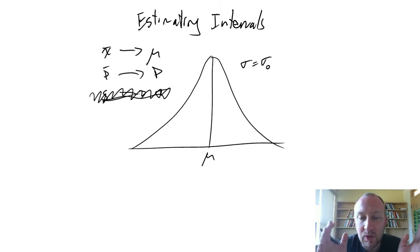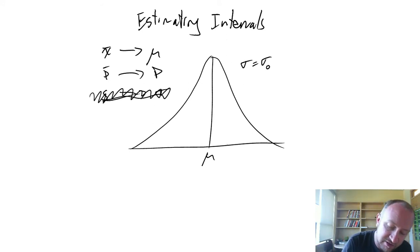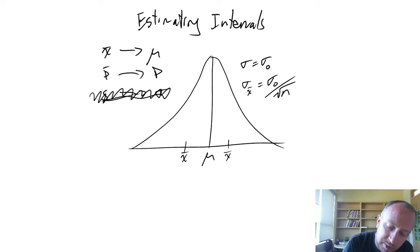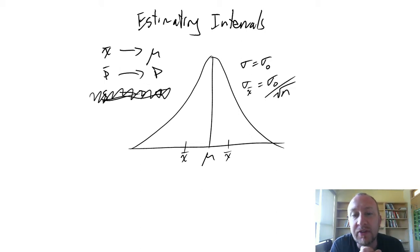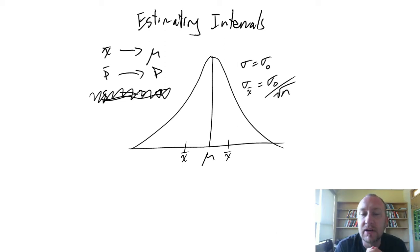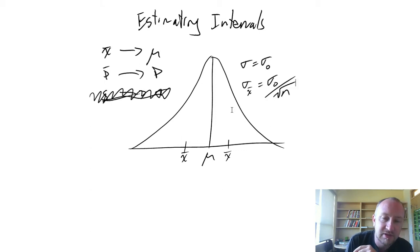We now understand that the sampling distribution — the distribution of sample means — is distributed by the standard error, which is the standard deviation divided by the square root of the sample size. We also covered the standard normal distribution in module 7.